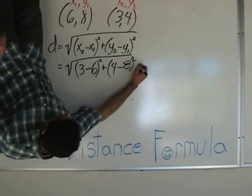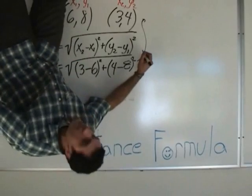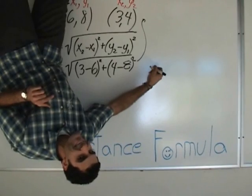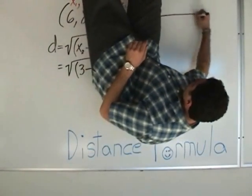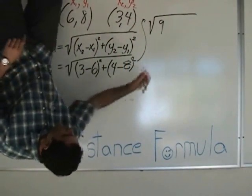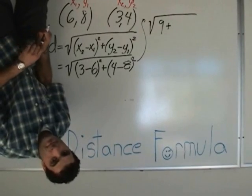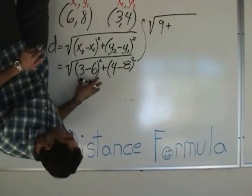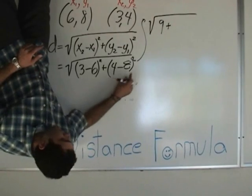What is 3 minus 6? Negative 3. Negative 3 squared is 9. Good — negative 3 squared is 9. 4 minus 8 is negative 4. Negative 4 squared is 16.